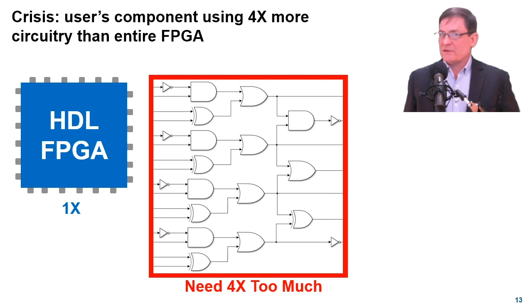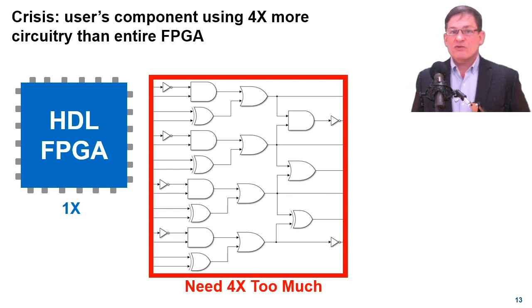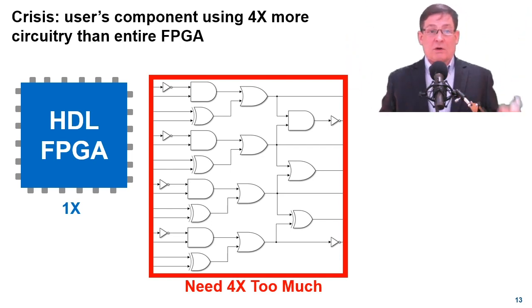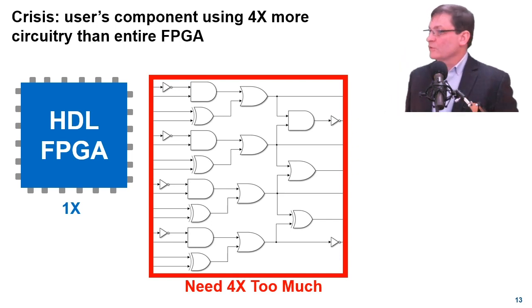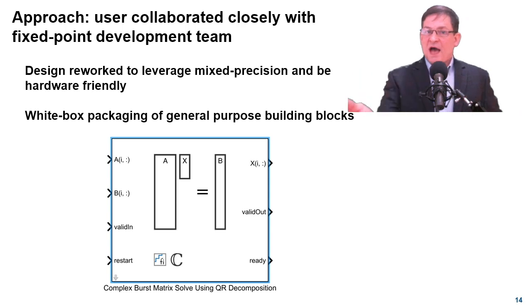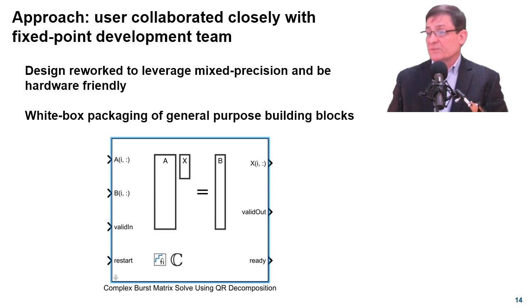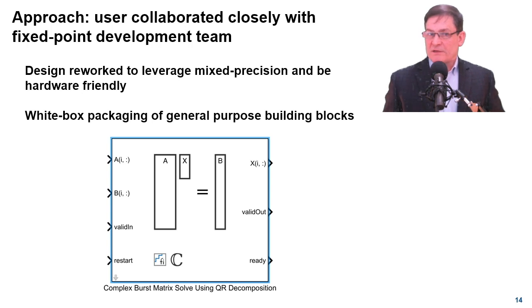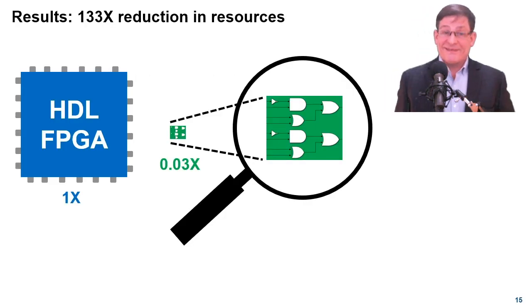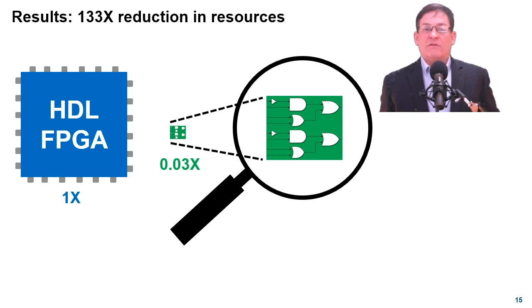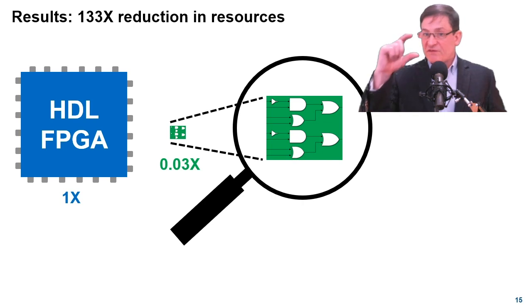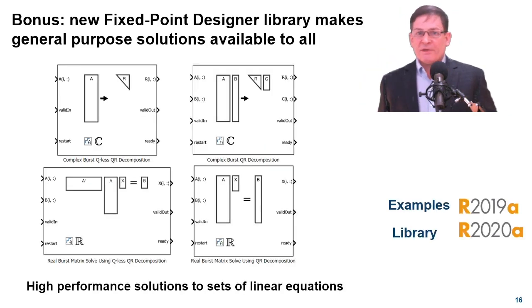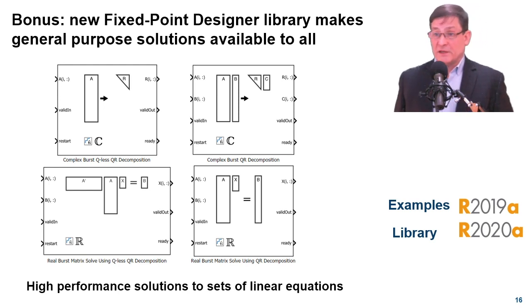Over the last couple of years, we've encountered many crises like the one shown here. A user's initial design seemed hopelessly big for the intended FPGA, but hopelessness was not an option. The user had to have a solution, and our team dug in to find all the opportunities to exploit mixed precision and hardware-friendly algorithms. From this effort, we developed a lot of very efficient building blocks. Resource consumption was reduced by over 130x. This huge reduction left lots of room for all the other components that also needed to fit on the chip. The building blocks supporting that success are now available to all of you.